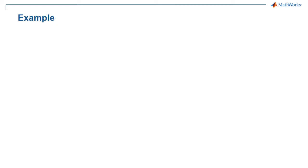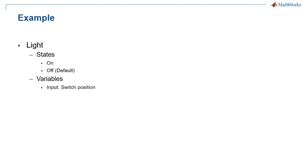For the first simple example, let's go back to the light we previously mentioned. The first step is to define the states, which are on and off, and let's say the default state is off. Next, we must define our variables: the input variable is the switch position, and the output variable is the state of the light. Finally, let's define the transitions. In our case, we only have one transition, which is the switch being flipped.